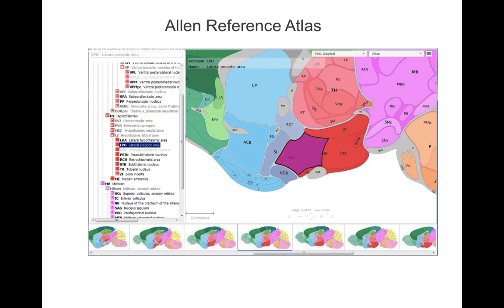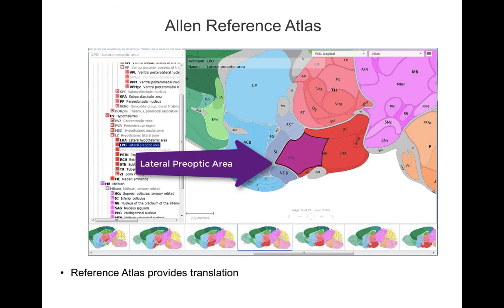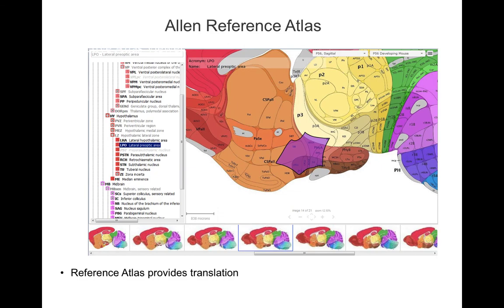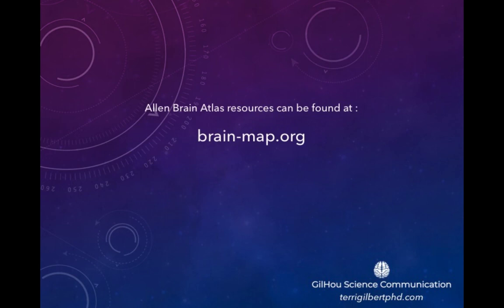By registering the two ontologies into the same reference space, you do have the ability to translate between the different structure names. A structure in the adult mouse brain, for example the lateral pre-optic area, or LPO, can be overlaid on top of the developing mouse brain atlas, showing which developmental structures it aligns with. This brief review of the data in the mouse gene expression atlases should be sufficient to give you a jump start to exploring the data and tools at brain-map.org.